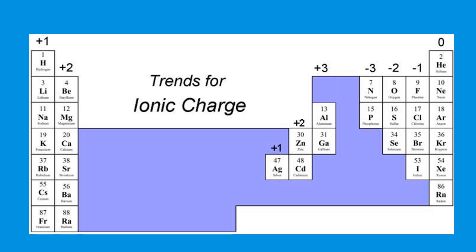We can use the location of an element on the periodic table to determine its charge. All elements in group 1 have a plus 1 charge; group 2 have a plus 2 charge; group 8 have a charge of 0; group 7 have negative 1; group 6 have negative 2; group 5 have negative 3; group 3 have plus 3. The transition metals in the middle have a set charge, and knowing these charges will be very important for naming compounds and writing formulas.